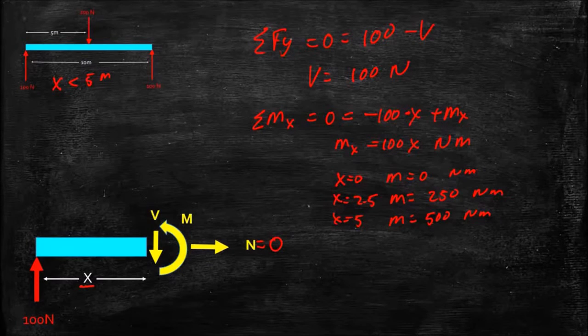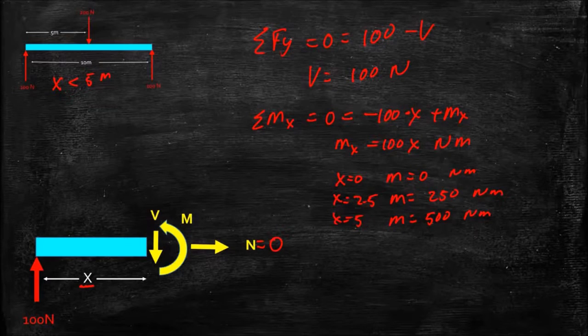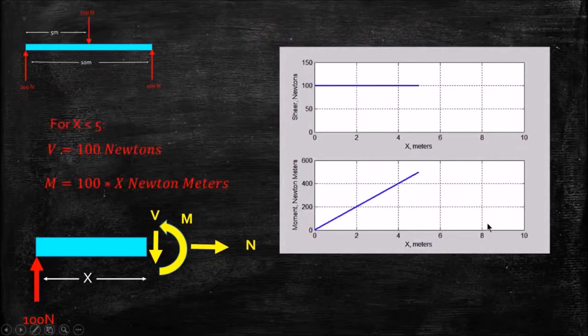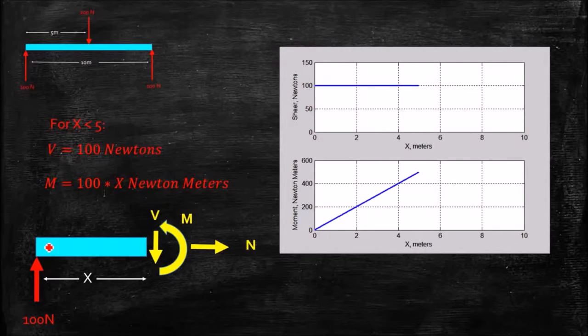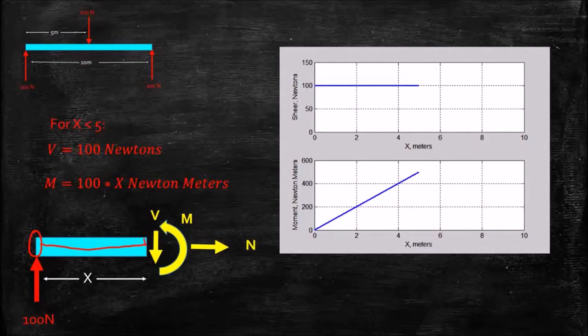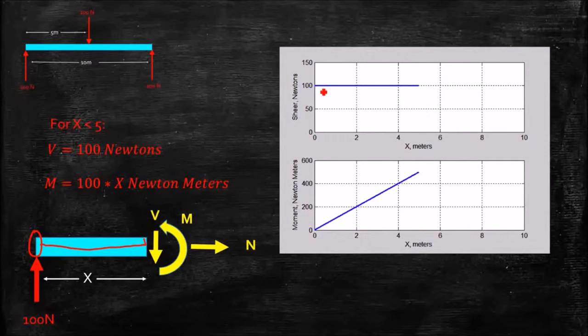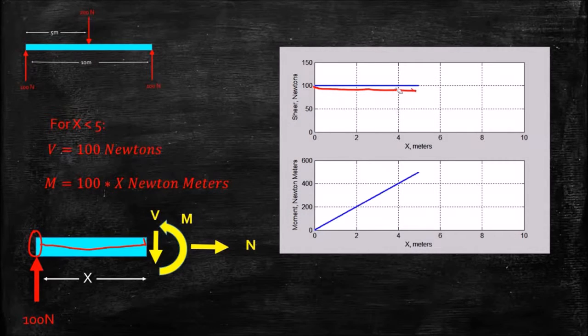So at any point now to the left of that 5 meter point, we can calculate what our moment needs to be, and on the next slide, here is a plot of that moment, and I'll point out that from this left edge, all the way over here to our section, there are no forces applied. There's no change in force, so our shear force is constant. There's no change in shear because there's no change in force.